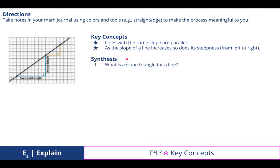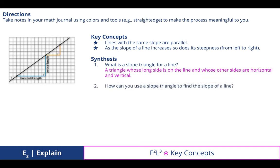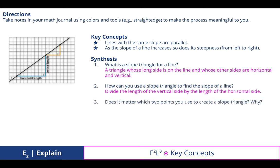So to synthesize, what is a slope triangle for a line? A triangle whose long side is on the line and whose other sides are horizontal and vertical. How can you use a slope triangle to find the slope of a line? Divide the length of the vertical side by the length of the horizontal side. Does it matter which two points you use to create a slope triangle? Why? Well, we discovered that any sized triangle, it doesn't matter how far away they are on that hypotenuse, they will create the same slope.